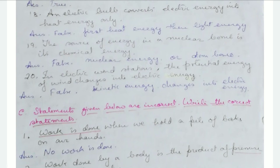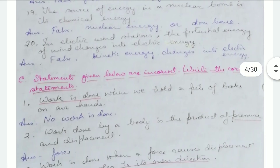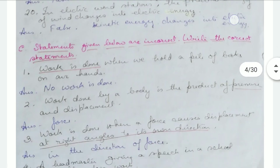In an electric wind station, the potential energy of wind changes into electric energy — that's false. It is the kinetic energy of wind that changes into electric energy.